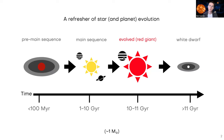After this, the star will leave the main sequence, become a subgiant and then a red giant, as it cools off and expands and becomes much more luminous. Convection is occurring deeper in the atmosphere of the star, and it has some planets still orbiting it. And then eventually it blows off its outer layers and you're left with just a white dwarf.